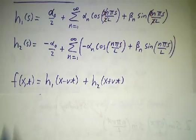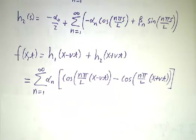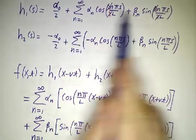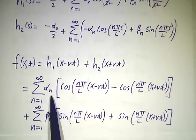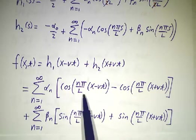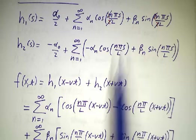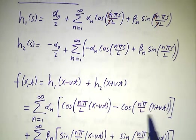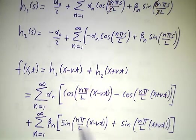So our actual function is h1 of x minus vt plus h2 of x plus vt. And by the way, I call the coefficients here alpha and beta. Usually we call them a and b, but a and b were already taken. So we're calling them alpha and beta. So we get alpha times these cosines. This term, alpha n appears in h1 and so it gives you this cos of n pi over L x minus vt. And it also appeared in h2 and so it gives you this minus cos of n pi over L x plus vt. And likewise, beta n appears here and here and so it appears twice as well.